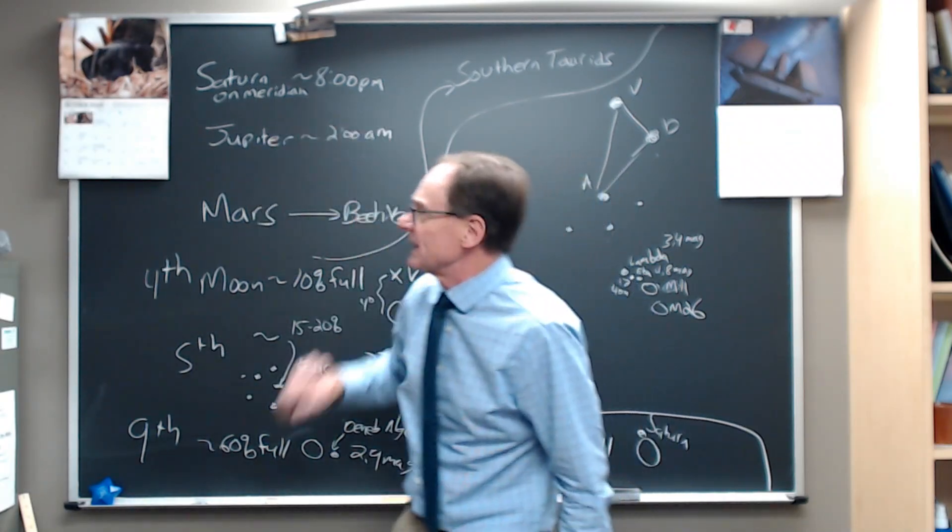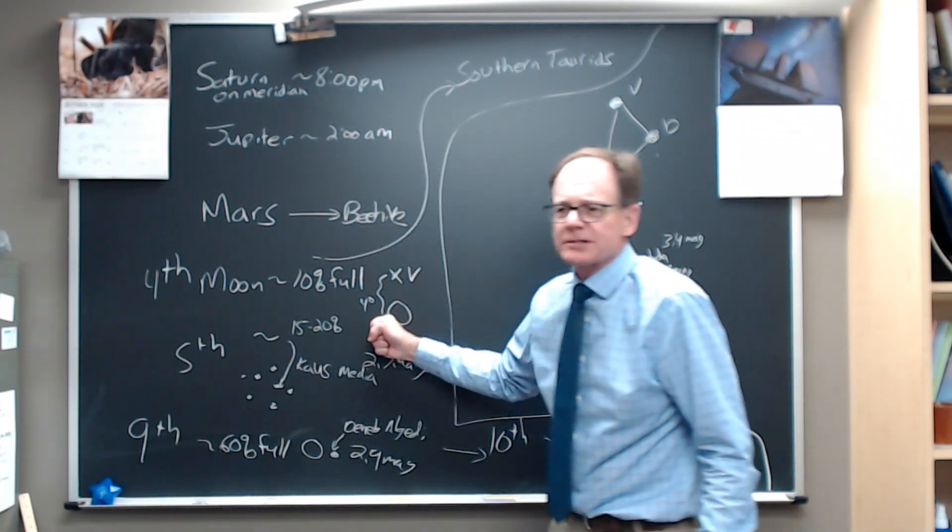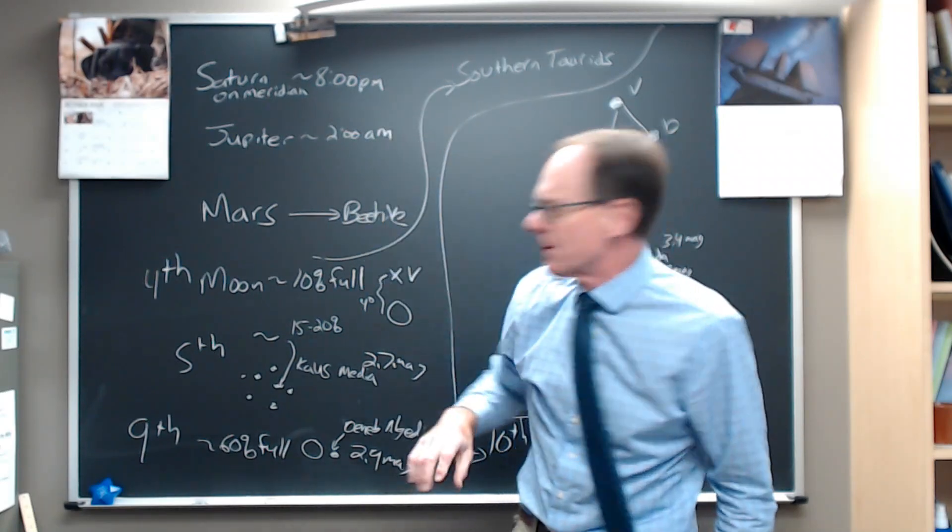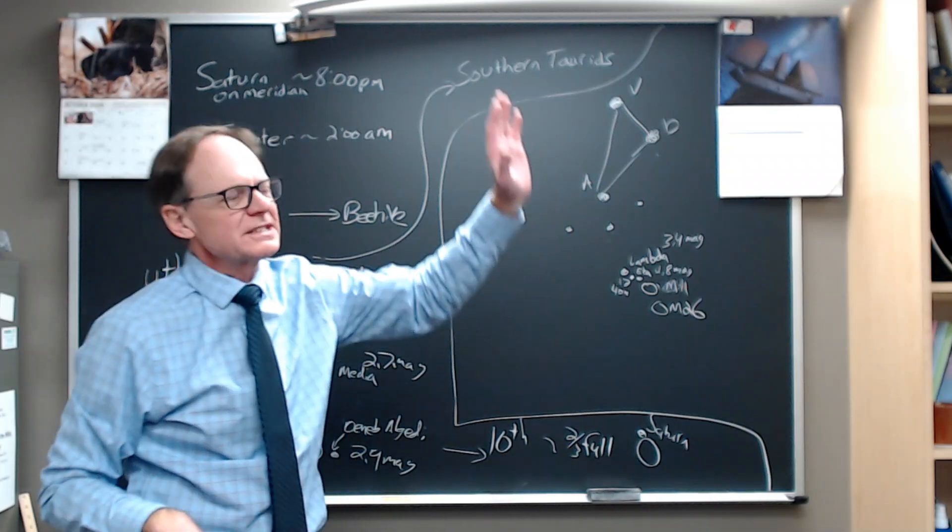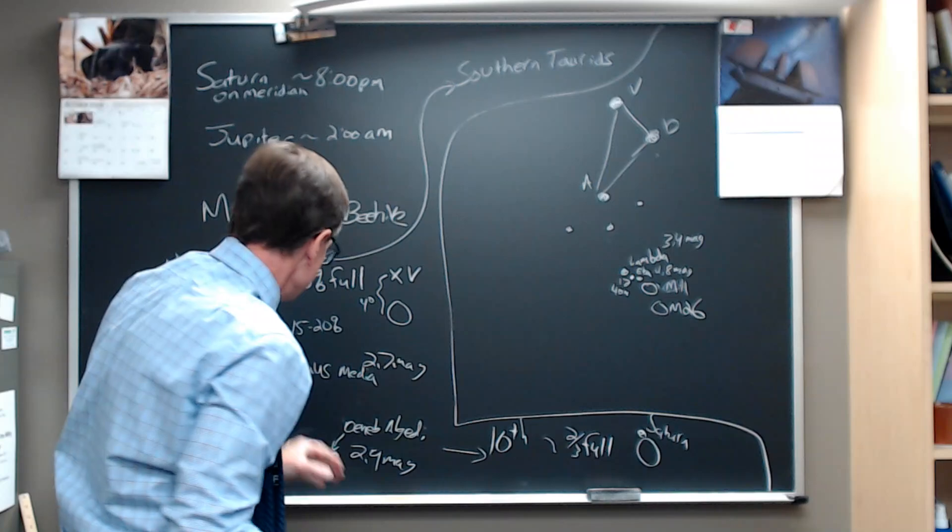On the 4th, the first evening of the week that we're talking about, the moon will be about 10% full and will be sitting just below Venus. About 4 degrees, about 4 moon diameters below Venus in the evening sky. So it goes out just after sunset. You see the glow in the west. You see Venus shining brightly. Big, bright Venus. There's the moon right below it. Great.